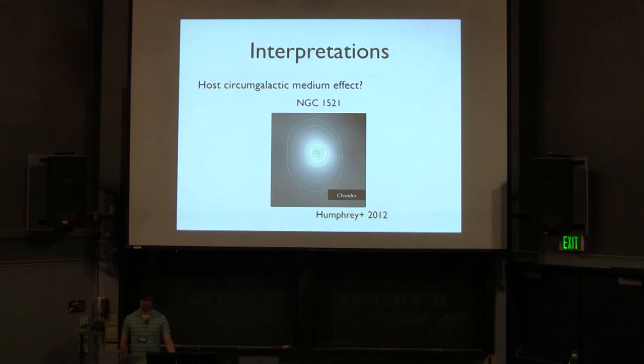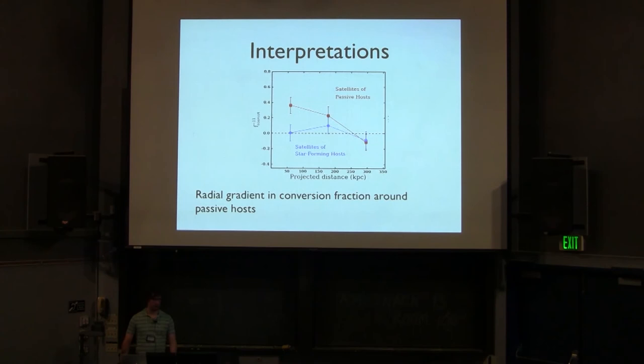Another possible interpretation is that these passive hosts are surrounded by hot gas in their circumgalactic mediums. So this is an image of an isolated elliptical galaxy, NGC 1521. You can see its hot halo in the X-ray. And then we also looked at conversion fraction as a function of projected radius. So you can see a gradient in projected radius that could potentially be tracing hot gas in the circumgalactic medium.